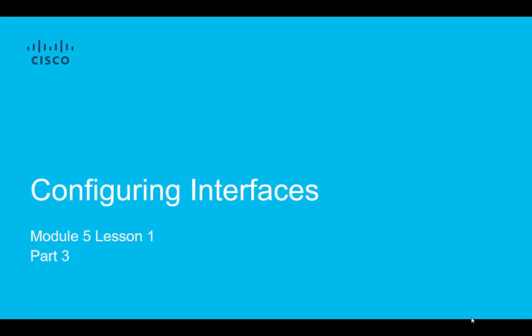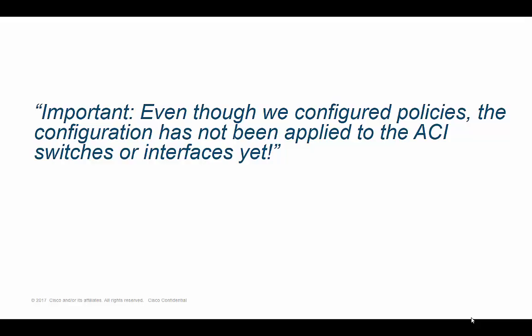Welcome to Module 5, Lesson 1, Part 3. So far we've covered the first four steps — creating VLAN pools, configuring domains, and so on — but nothing has actually been applied to the switches in the ACI fabric yet.